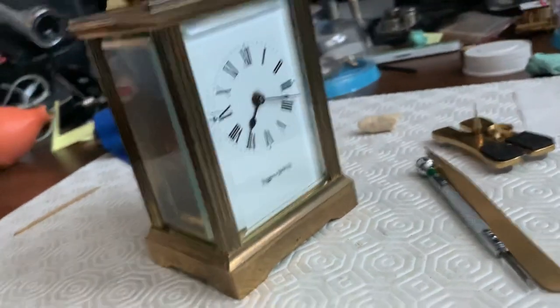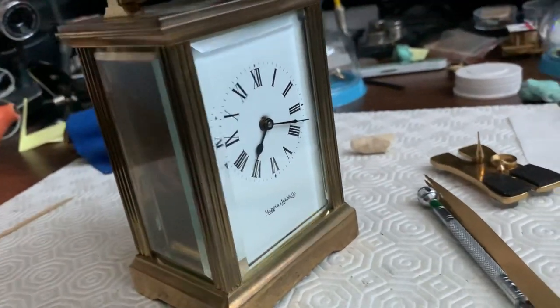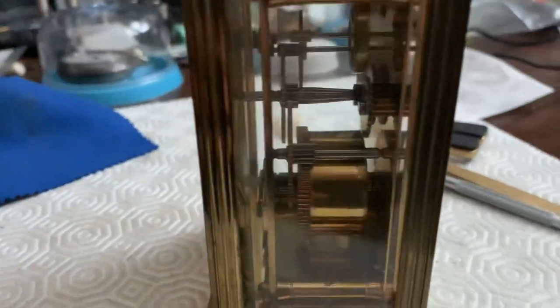A quick update on this old Mappin and Webb carriage clock. Here it is. I had stripped this down to nothing, cleaned it up, and oiled all the parts. As you can see, the one part